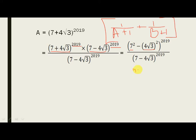4 square is 16. 16 into root 3 square. 16 into 3 is 48. So, 49 minus 48. What is 49 minus 48? It is 1.